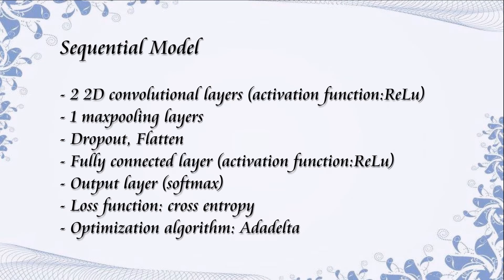Let me introduce the configuration of our CNN. We adopt a sequential model for our recognition system. Our sequential model contains three major components: convolutional layer, max pooling layer, and fully connected layer. In order to make our system run in real-time, we adopt a 2D convolutional layer. After the 2D convolutional layer, one max pooling layer is applied to make our model more robust to noise.